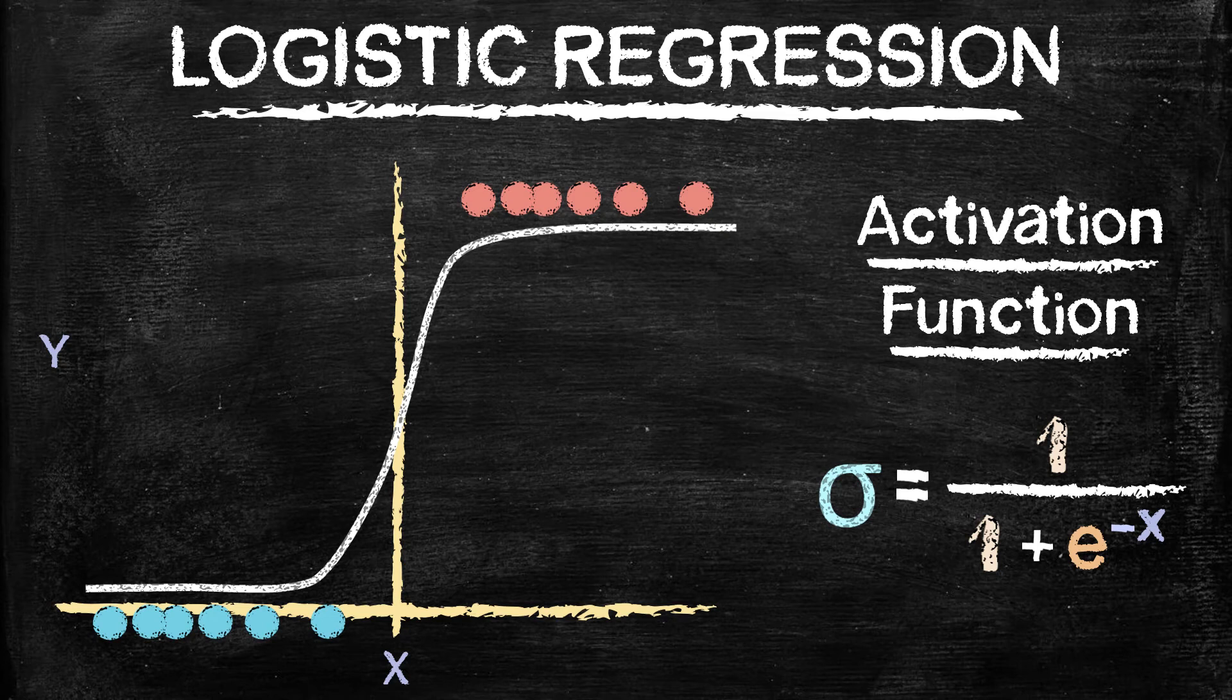And so again, we're just trying to map those features to look like this, where we're predicting some output class as a value from 0 to 1, in this case, for binary classification.